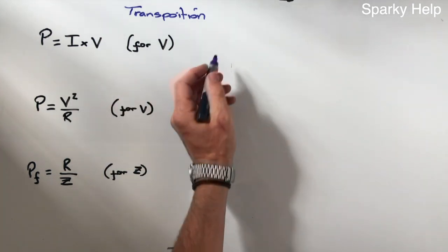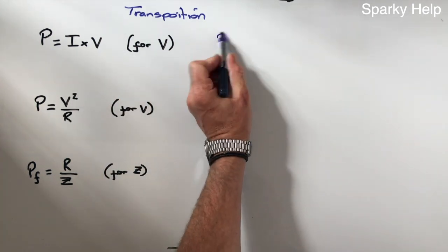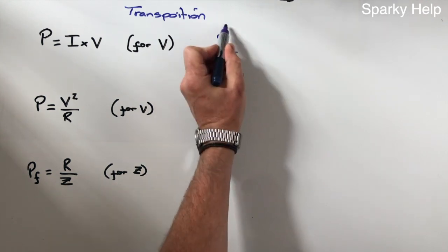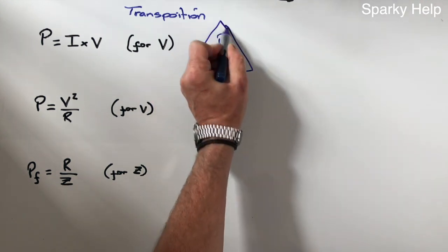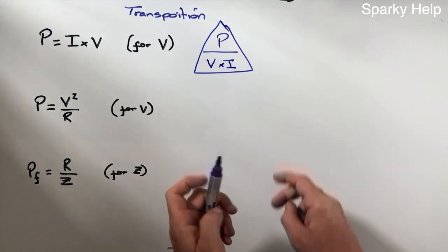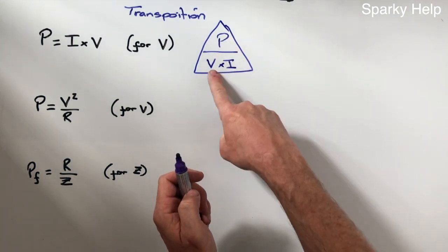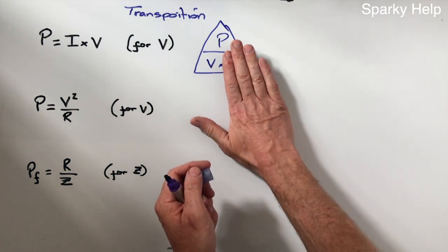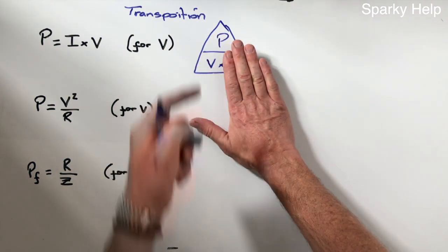This one here, well, we know it fits in a triangle. And if you can remember they fit in a triangle, then all you need to do, if you want to find P, it's obviously V times I. If you want to find I, cover up I and it's P divided by V.